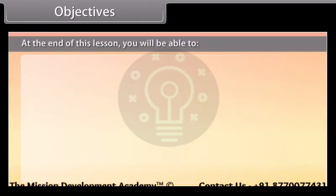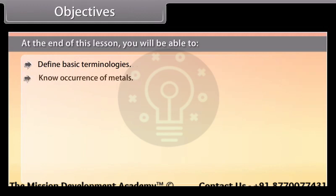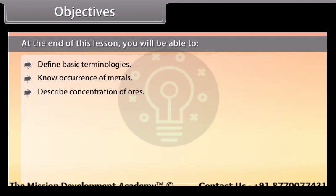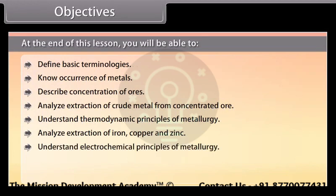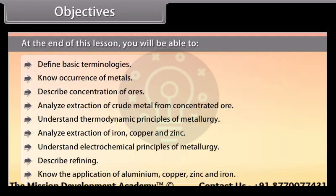Objectives. At the end of this lesson, you will be able to define basic terminologies, know occurrence of metals, describe concentration of ores, analyze extraction of crude metal from concentrated ore, understand thermodynamic principles of metallurgy, analyze extraction of iron, copper and zinc, understand electrochemical principles of metallurgy, describe refining, and know the application of aluminium, copper, zinc and iron.